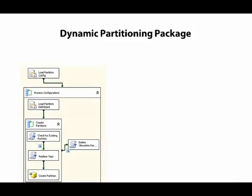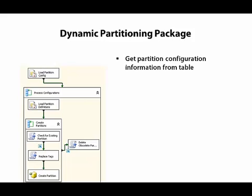Once we have the dynamic partitioning configuration table in place, we can build Integration Services packages to create and process the partitions. If you're not familiar with Integration Services, you can view my Integration Services Fundamentals course on Pluralsight to learn more. We can have one package to create partitions, which reads the partition configuration information from the configuration table — specifically the database, cube, and measure group name, as well as the SQL that determines how many partitions are needed for the current fact table data, and the XMLA script template needed to create partitions. If we have multiple databases, cubes, and measure groups to process, we'll loop through each one as a separate partition configuration.